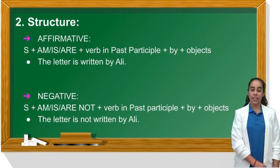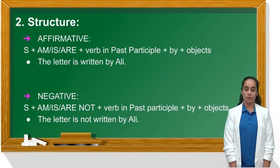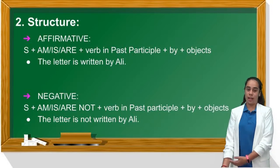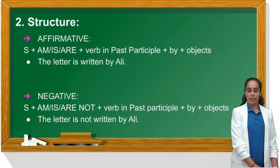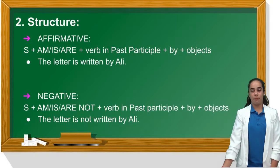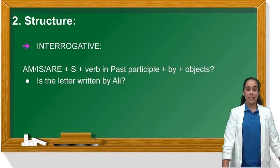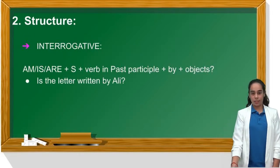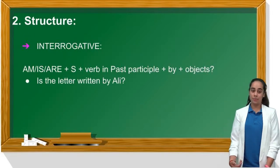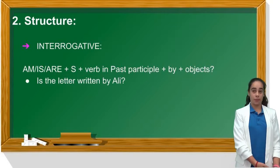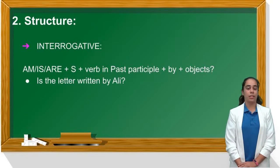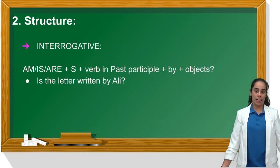In a negative sentence, we only add 'not' — for example: 'The letter is not written by Ali.' In a question, we start with the verb to be (is/are) + the subject + the verb in past participle + by + object. For example: 'Is the letter written by Ali?'